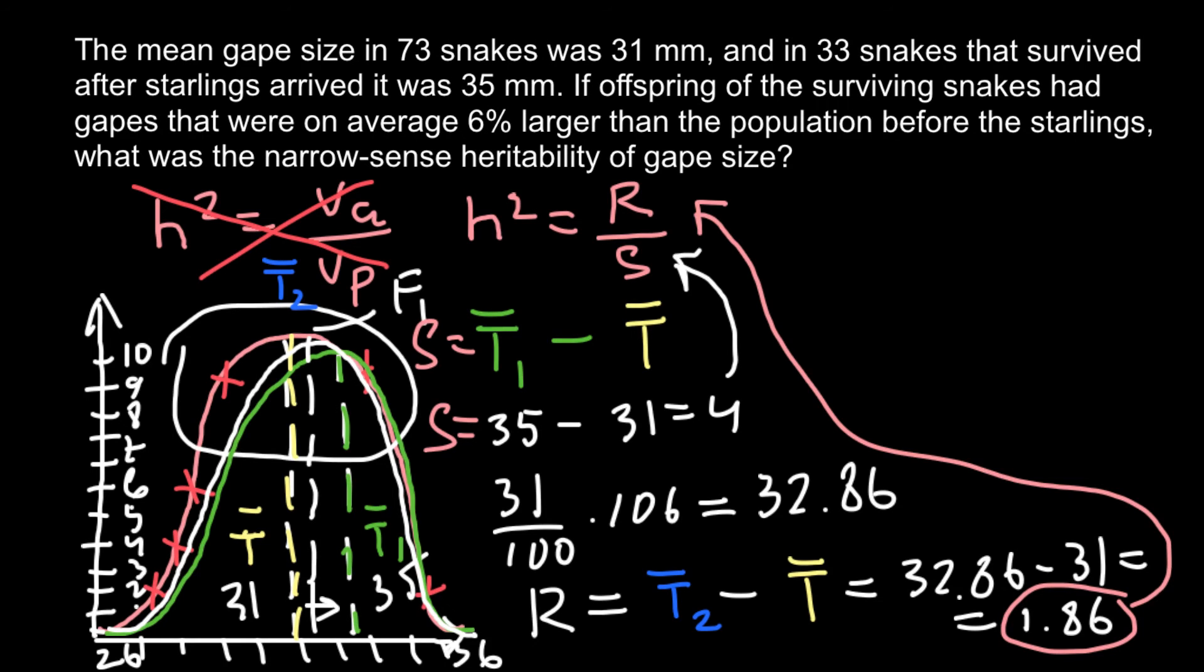One more time. h² here stands for the proportion of the additive trait to total phenotypic variance. And in our formula R stands for the response to selection. And S is selection differential between original population and mean of the population after selection. So let's now put all the numbers. h² equals 1.86 divided by 4, and the answer is going to be 0.465. And this is going to be our answer today.